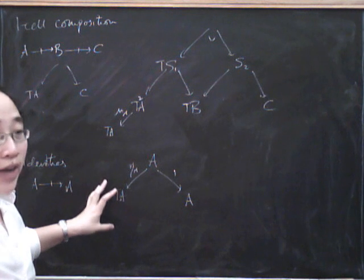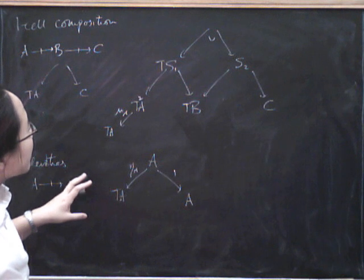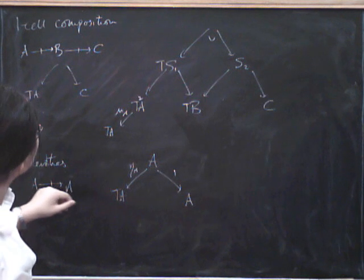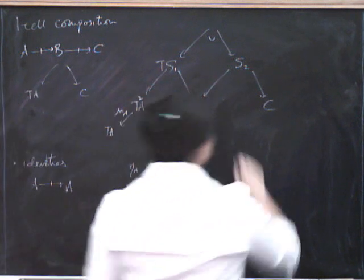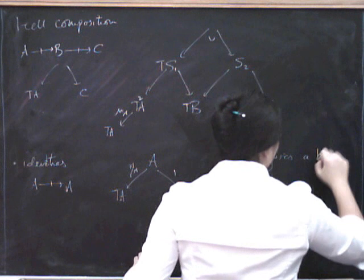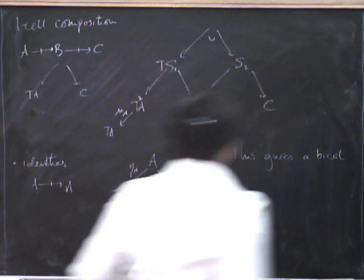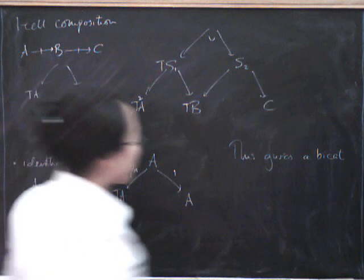So that's what the identity on A is going to be. And we can now check that this satisfies the axioms for being a bi-category. So this is a bi-category. And it follows from the axioms for T being a monad.